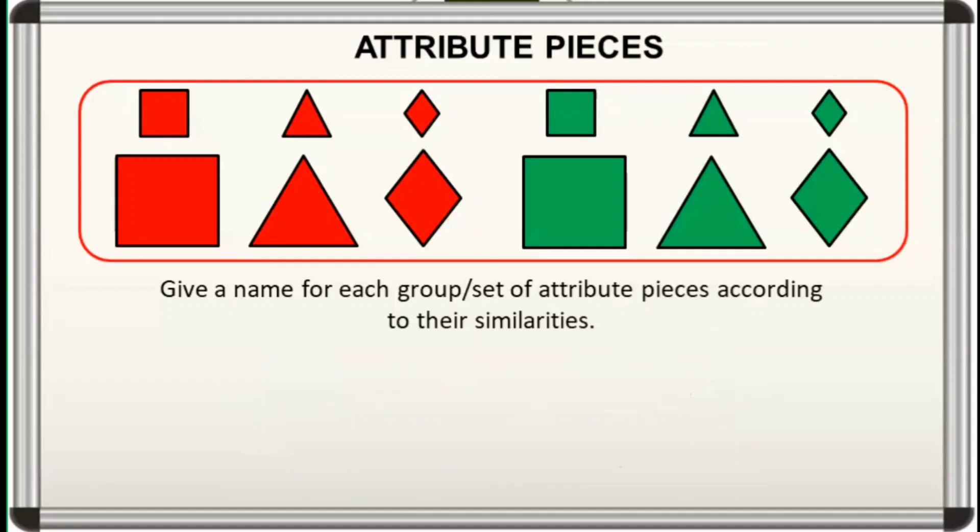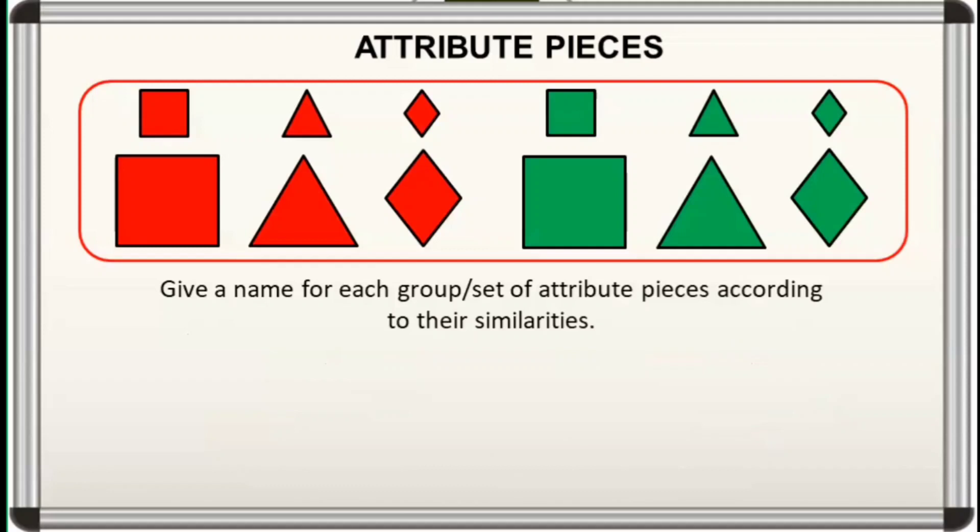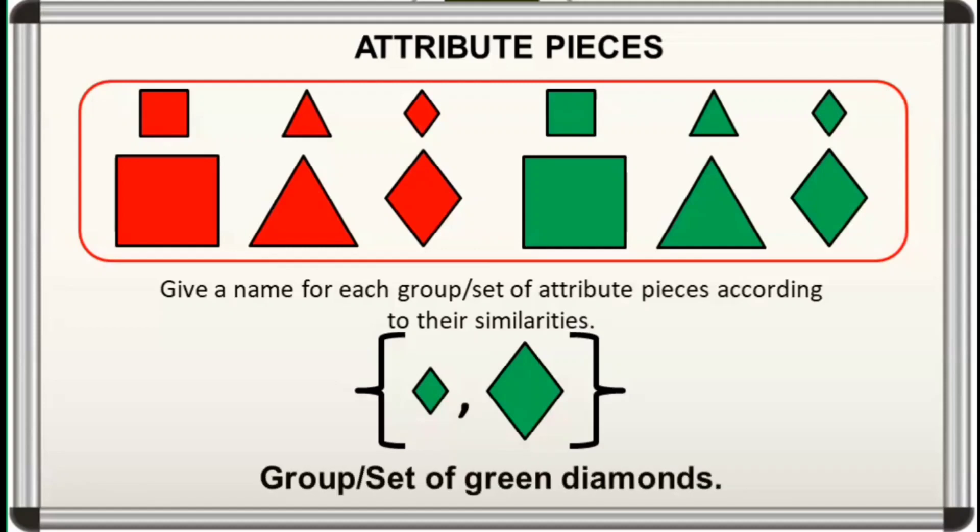And for the third one... Okay! It's a group or set of red attribute pieces. Lastly... Good! It's a group or set of green diamonds.